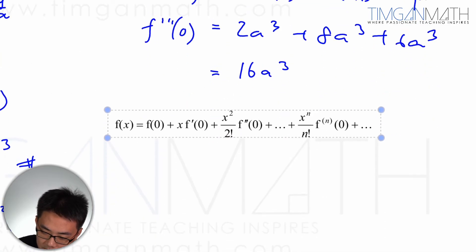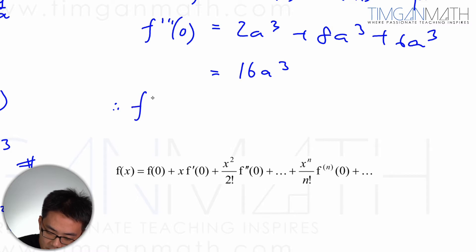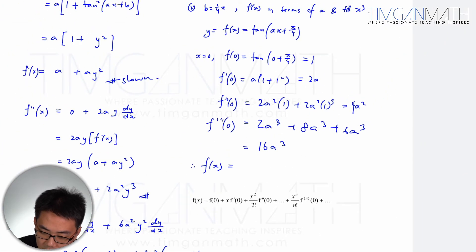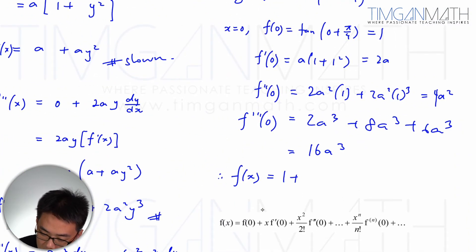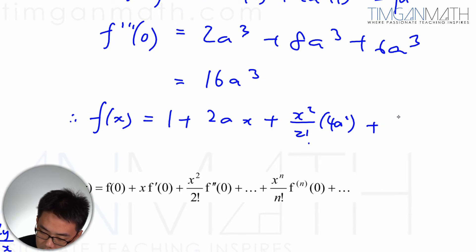Then using this, f(x) will just be f(0), which is actually 1, plus f'(0), so this is 2ax plus x²/2! f''(0), which is 4a², plus x³/3!, which is 16a³.